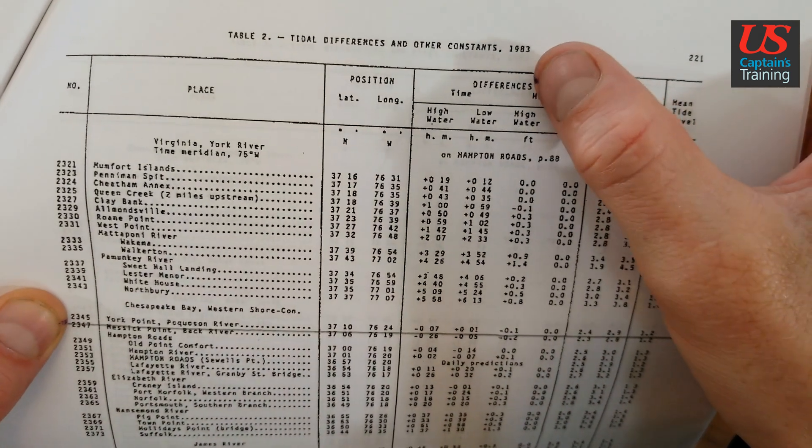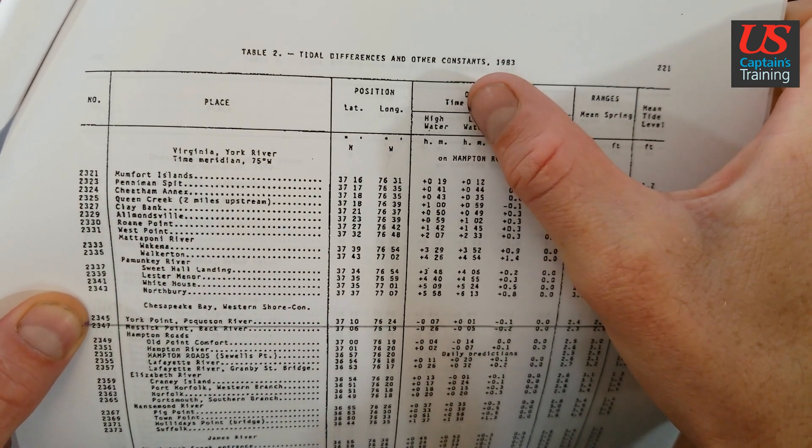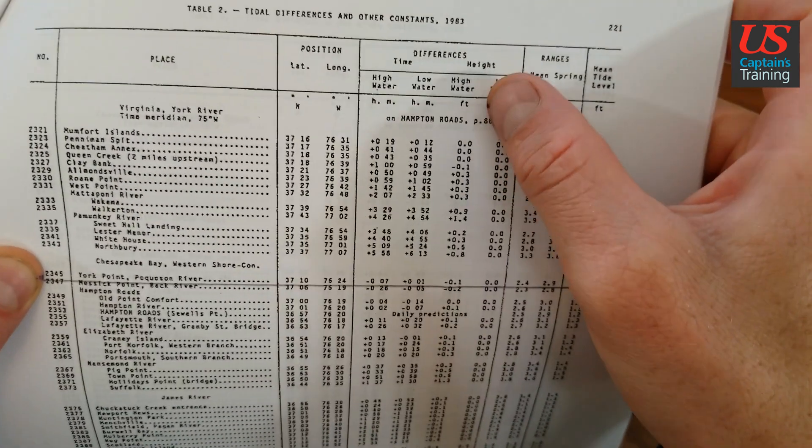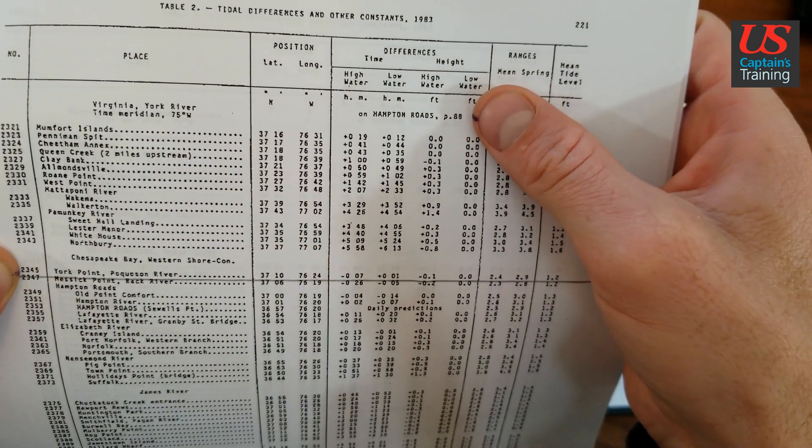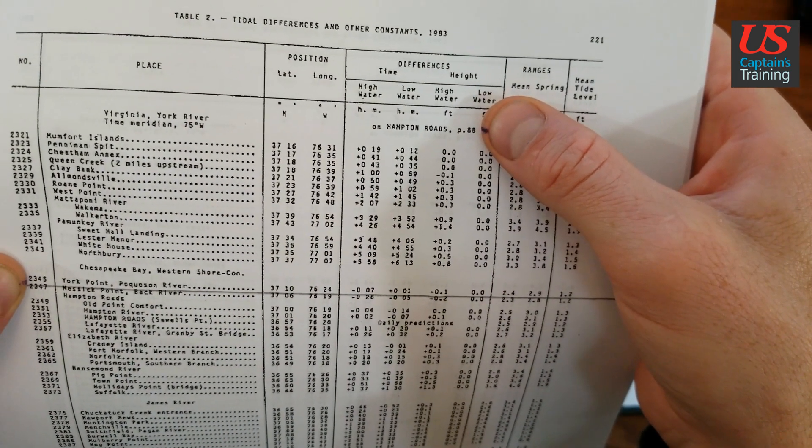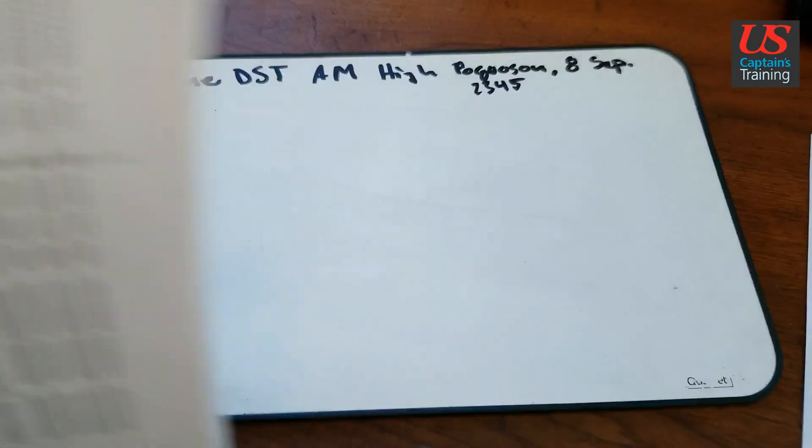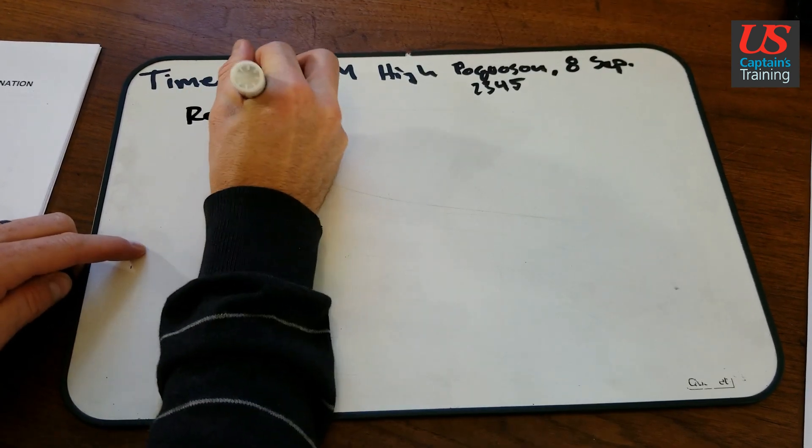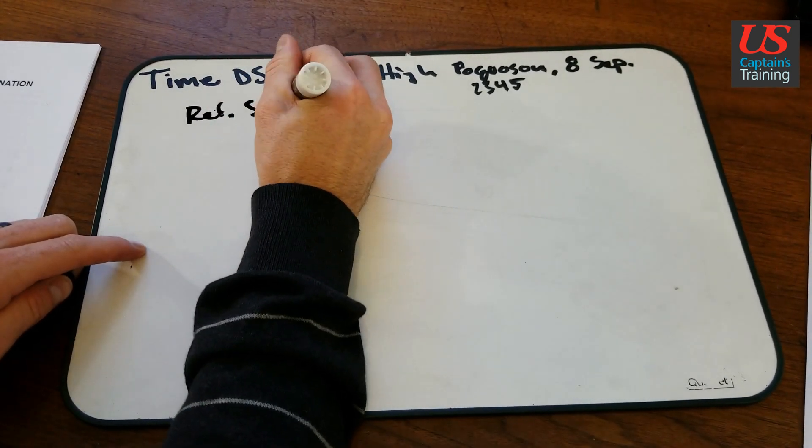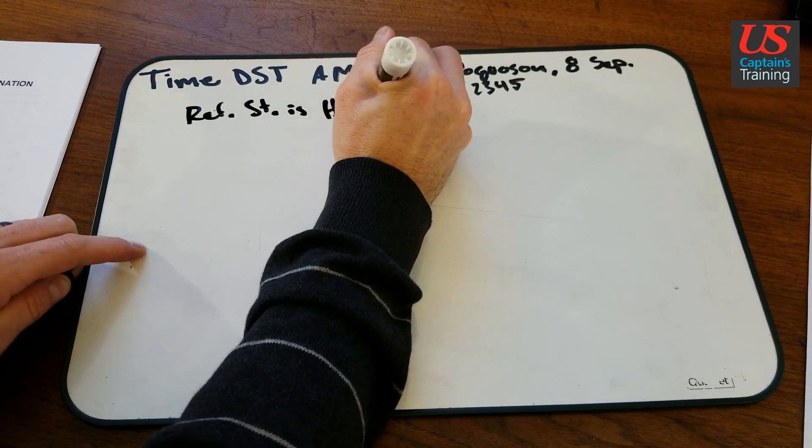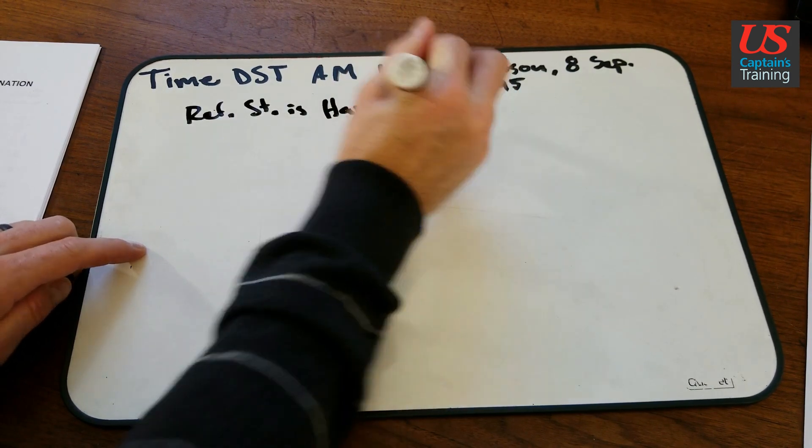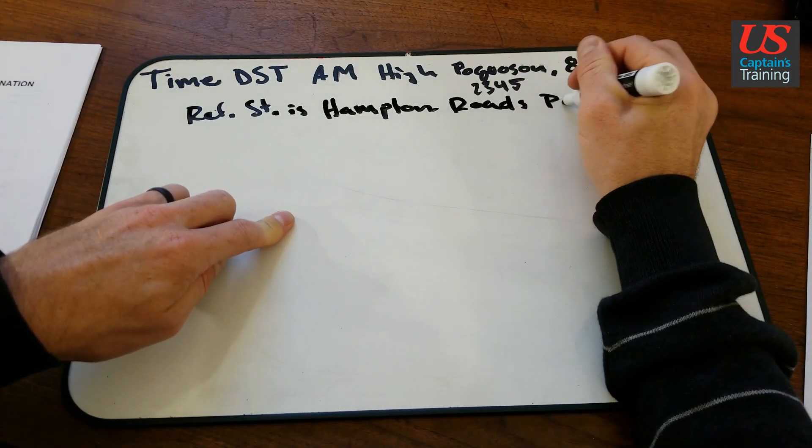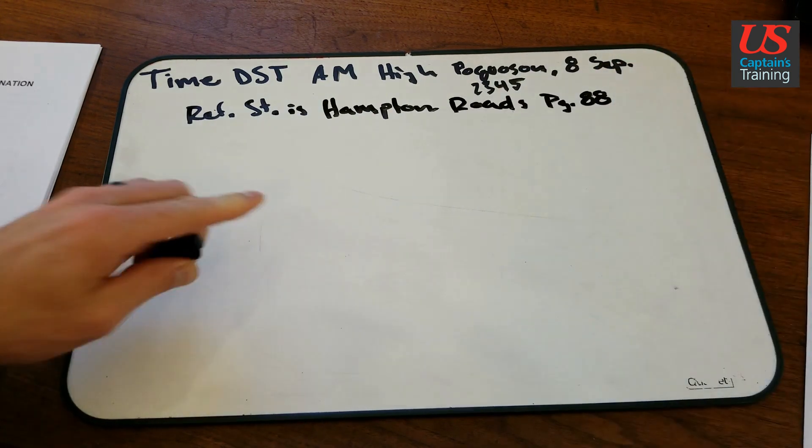And we're interested in the differences. Time difference of high water, time difference of low water, height difference of high water, height difference of low water. And right here, this is our reference station, which will take us into our table 1s. Hampton Roads, page 88. I'm going to record that reference station. Ref station is Hampton Roads, page 88.